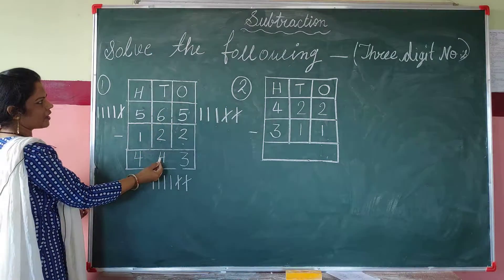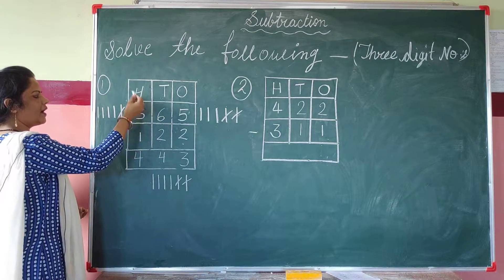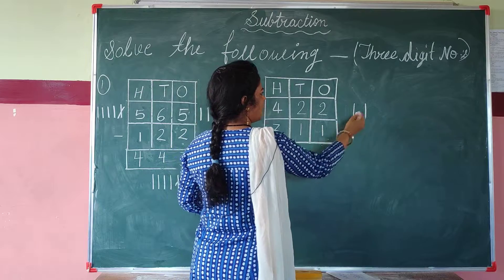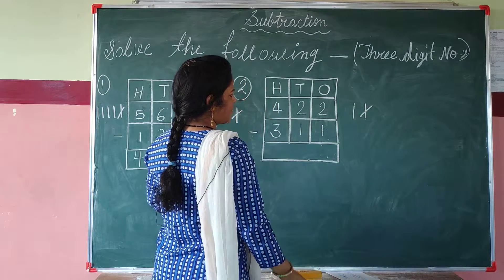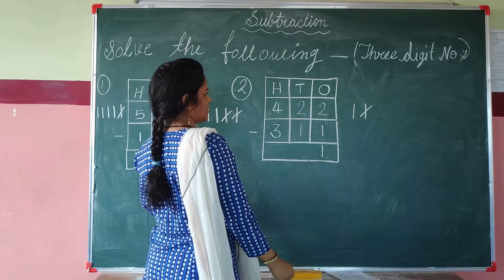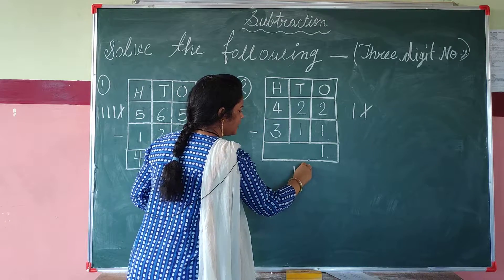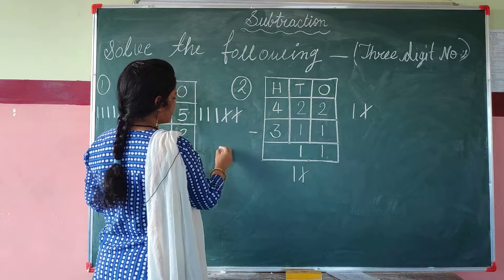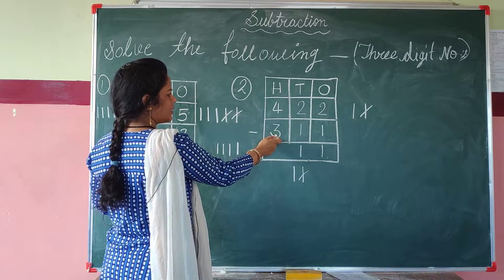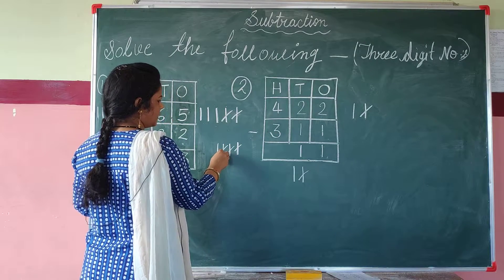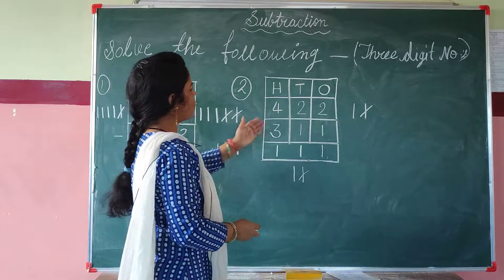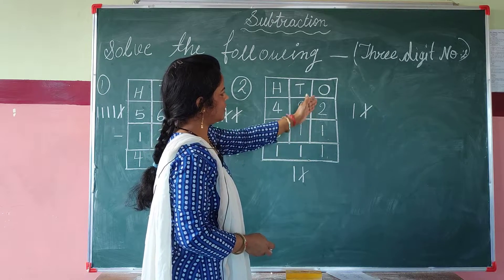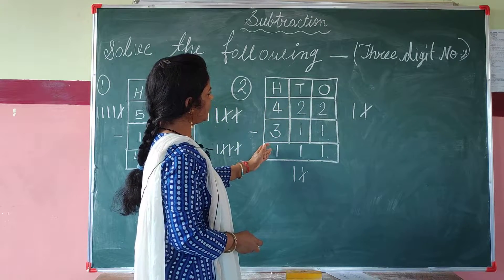3 at one's place, 4 at ten's place, and 4 at hundredth place. Now the second 3-digit problem: This is number 2 at one's place — we draw 2 lines: 1, 2. This is number 1 — we cut 1 line. How many lines are left? 1. We write 1 at one's place. This is number 2 at ten's place — we draw 2 lines and cut 1 line. Answer is 1. We draw 4 lines: 1, 2, 3, 4 and cut 3 lines: 1, 2, 3. Answer is 1. When 422 minus 311, our answer is 111.